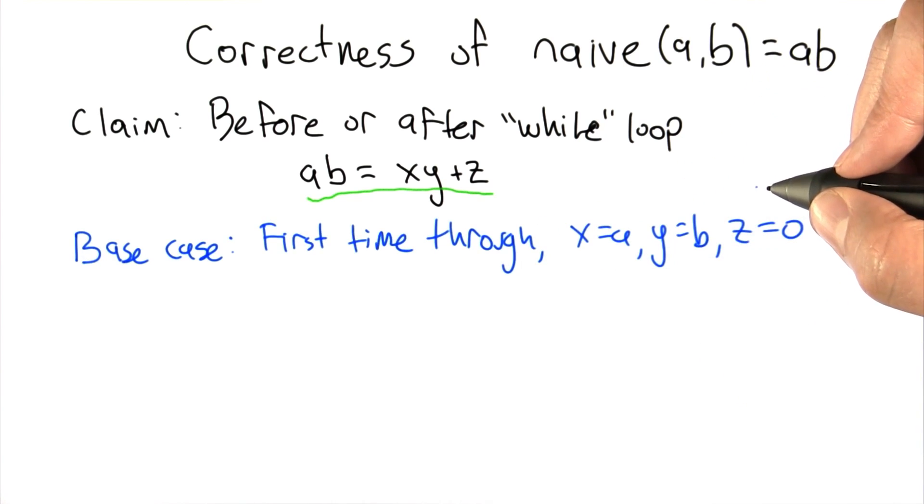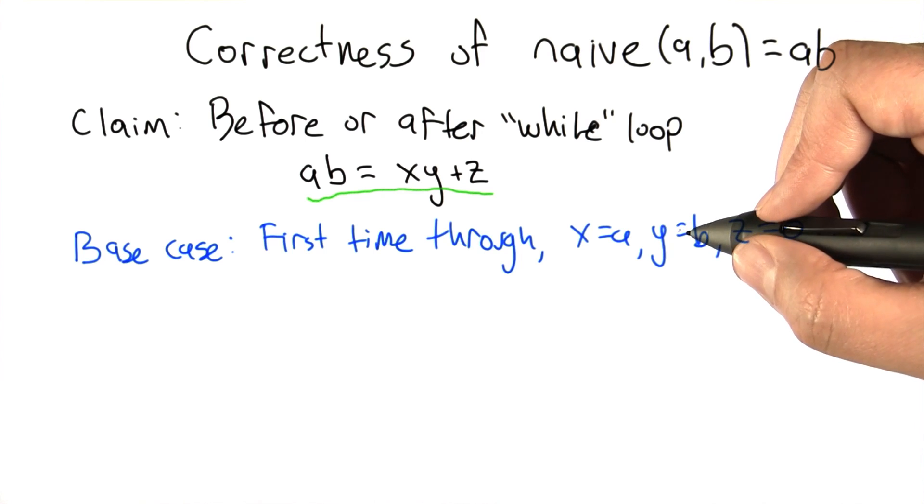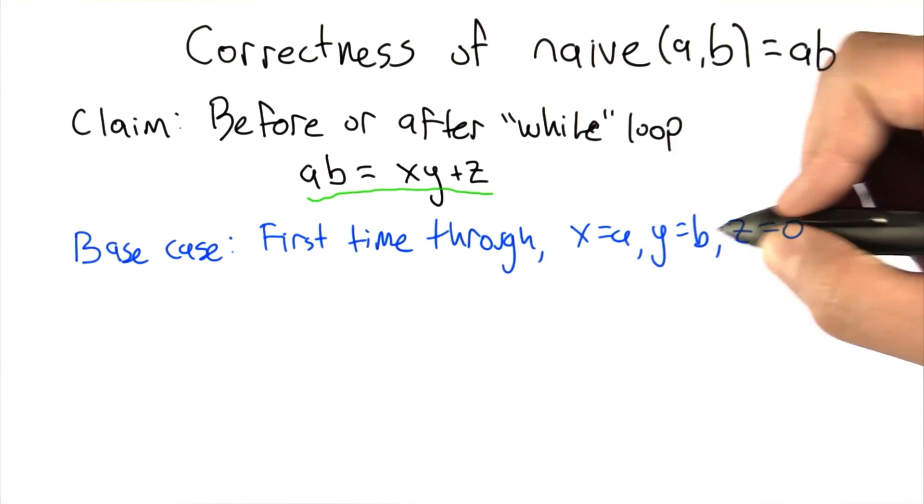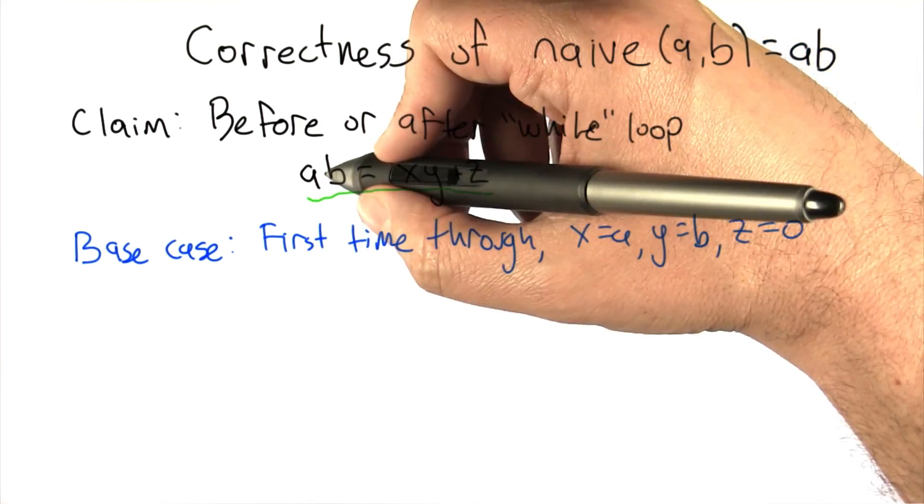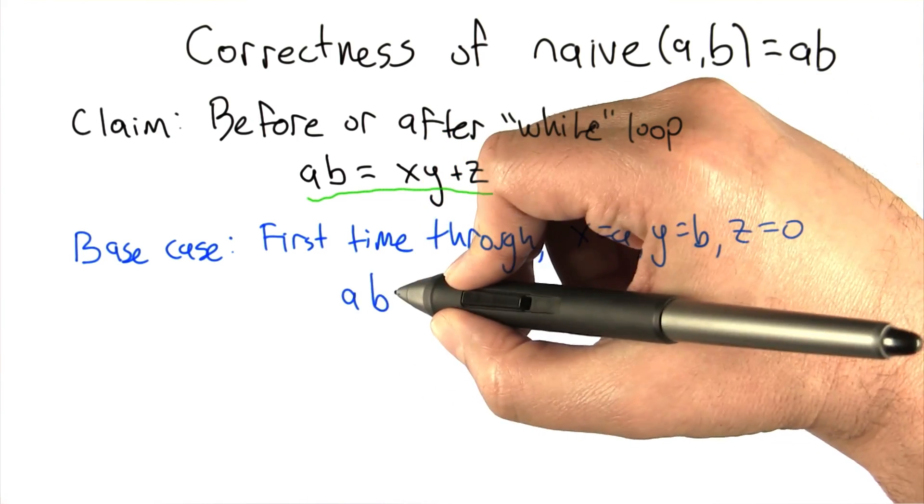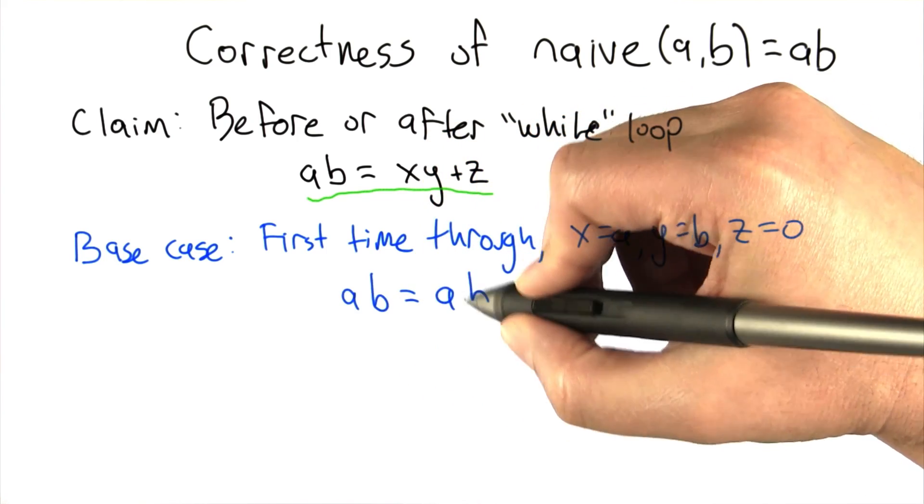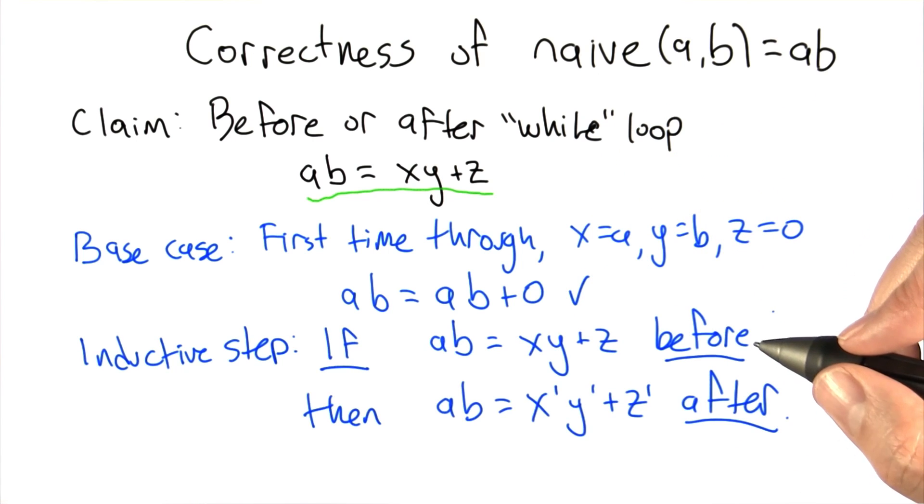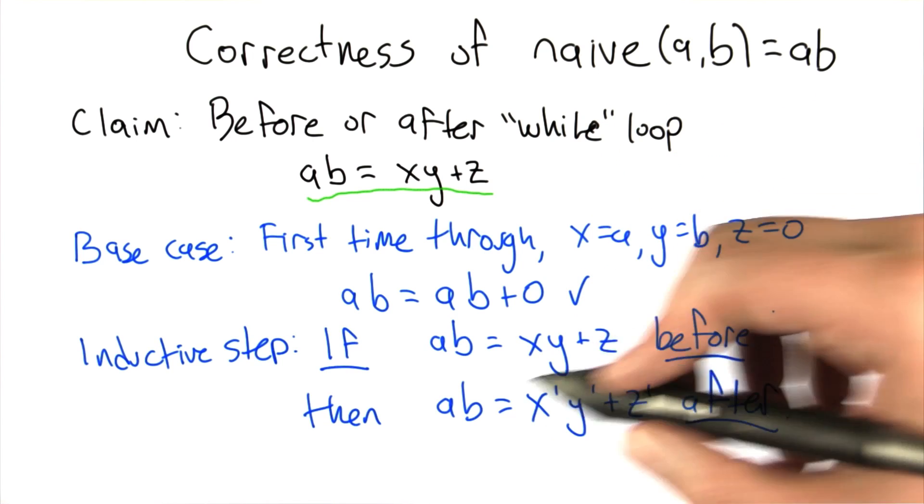The first time we're going through the while loop, in the very beginning at the top of the function, X is assigned to A, Y is assigned to B, and Z is assigned to 0. So let's check the expression with those variables plugged in. We're saying that AB equals AB plus 0. Well, that's kind of obvious. The next thing we're going to show is that if it's the case that at the